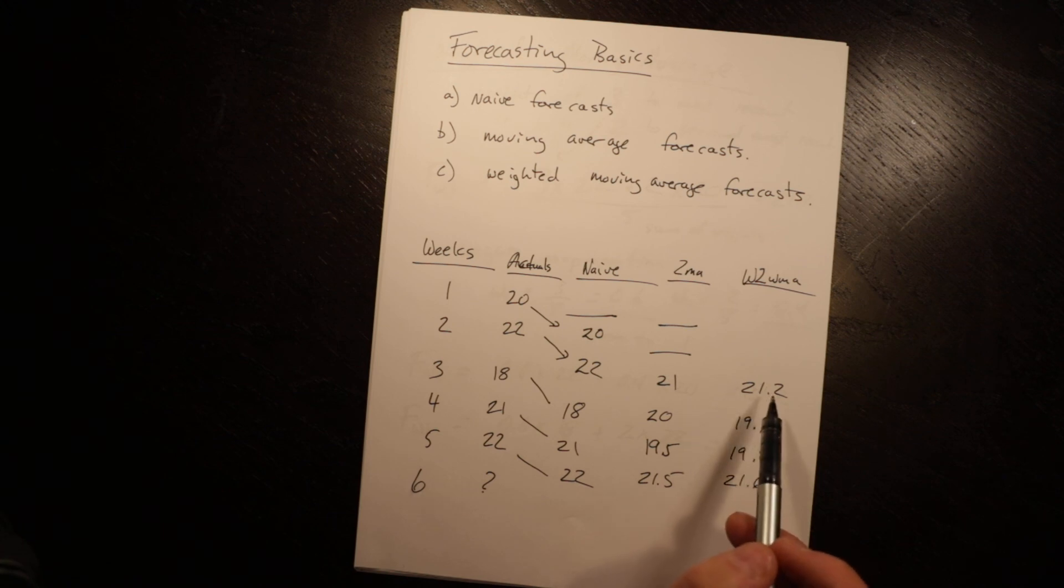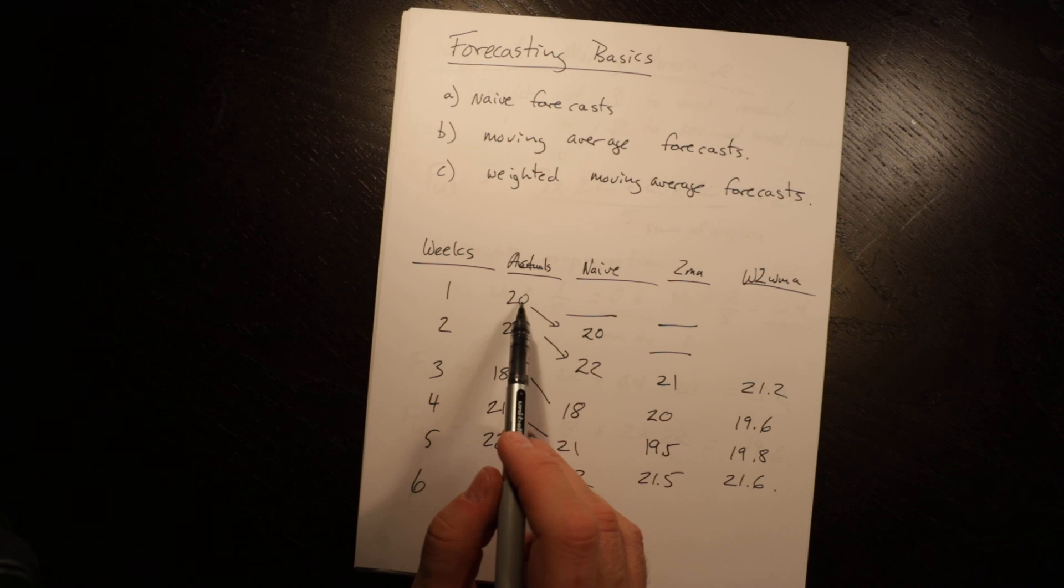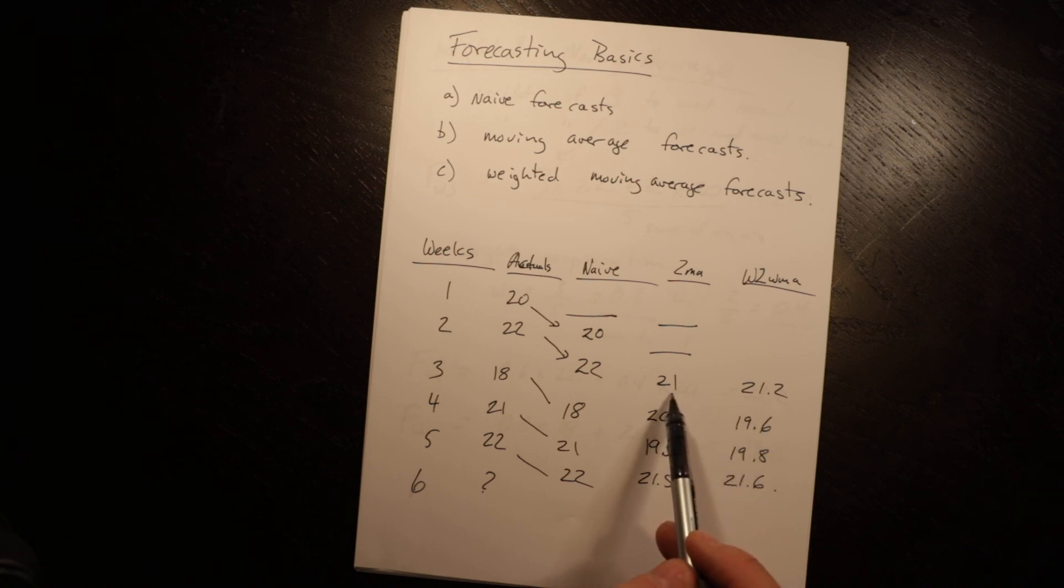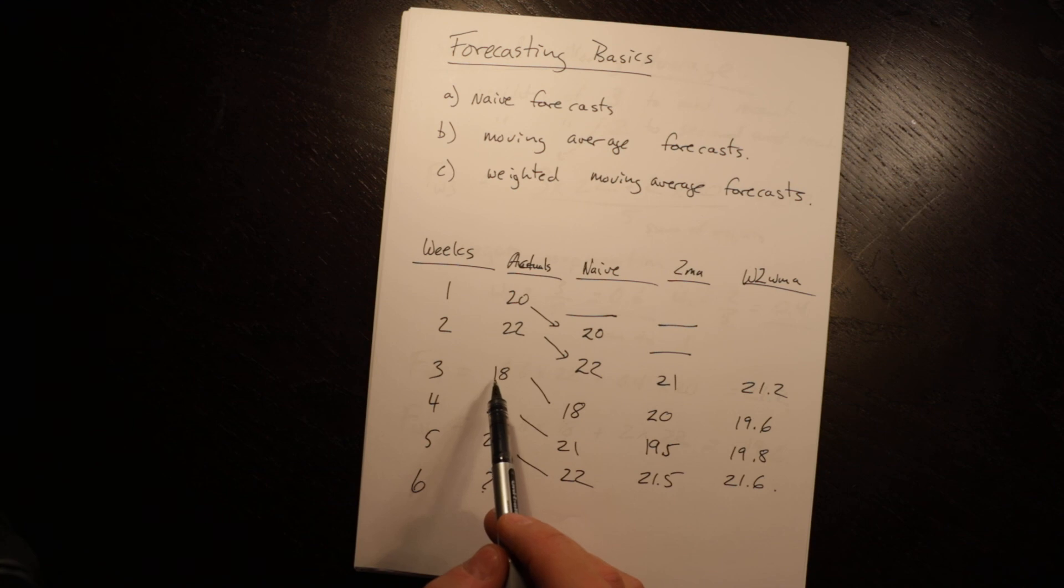So all this does is it says in period two, we had 22 in period one, we had 20. We think this one is more important. So in fact, we end up slightly higher than the moving average. Then in week three, we went down to 18. We think 18 is more important than 22 because we have some recency bias. And so we get down to 19.6, which is lower. So it just responds more quickly than the two week moving average to those changes. So again, there's sometimes example, when you have a trend in one direction that you would want to reflect a weighted moving average and reflect the most recent ones more. But if you use a weighted moving average and you have a real outlier, then essentially you're putting that outlier, giving that outlier more weight and responding even more significantly to it.